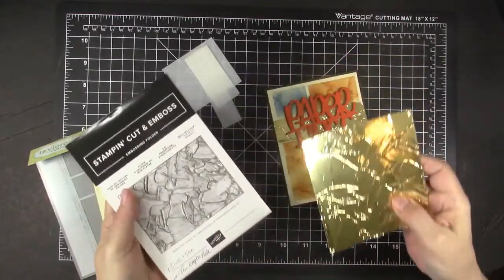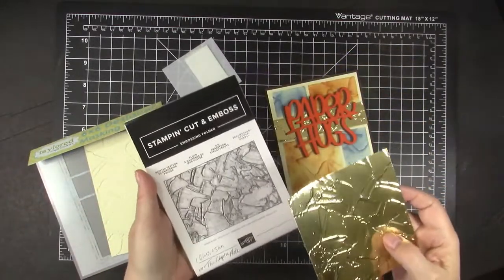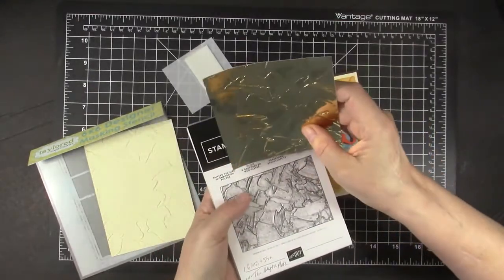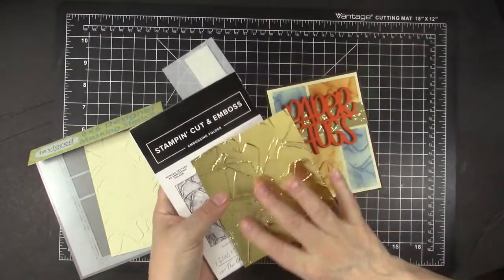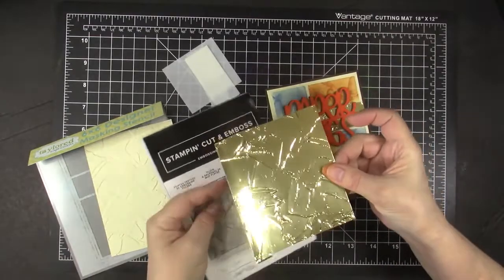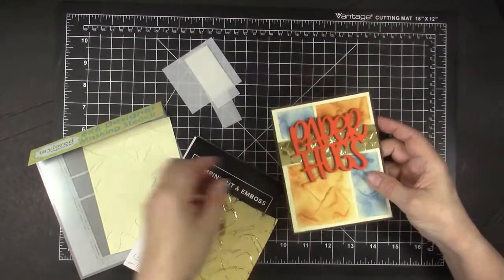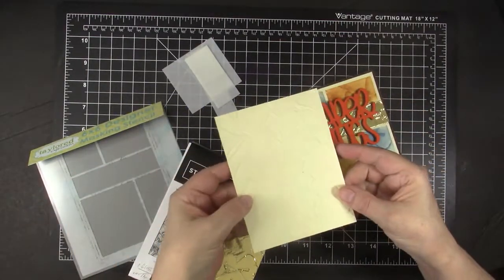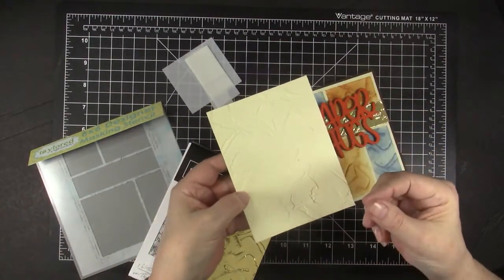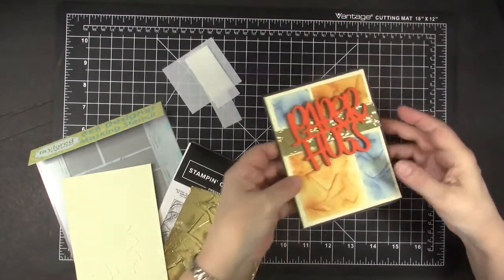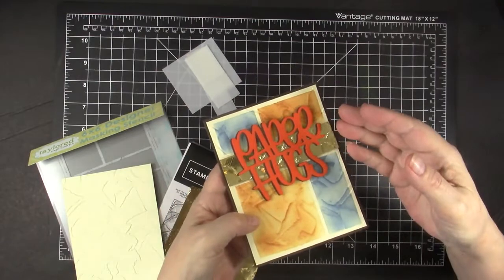This is another new 3D embossing folder I got from Stampin' Up and it's called Painted Texture. And it is really pretty also on mirror card. And I did it on that. And then I also embossed it on a piece of thick cream card stock.